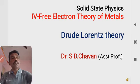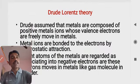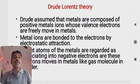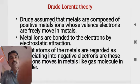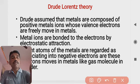First of all, let us start with around the 1900s, when Drude worked on this theory. What Drude assumed is that metals are nothing but composed of positive metal ions whose valence electrons are free to move within the metal. That is quite an interesting assumption.